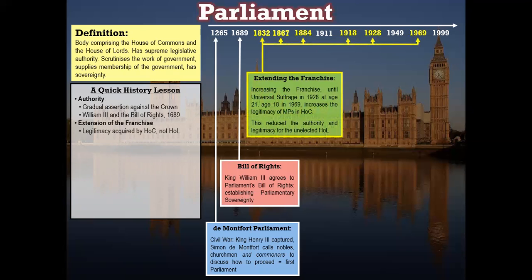After that, we have the extension of the franchise. There are six separate dates at which the franchise was extended. Each extension, from 1830 through the Great Reform Act right the way through to 1969's Representation of the People Act lowering the voting age to 18 with universal suffrage, allowed the House of Commons — being elected — to gain more legitimacy than the House of Lords, which is unelected. Although the House of Lords is often referred to as the upper chamber, it is less powerful and less influential than the House of Commons.